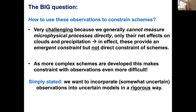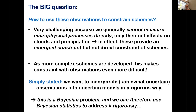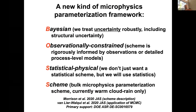Stepping back, we want to incorporate observations — which always have some uncertainty — into uncertain models, but do this in a rigorous way. If you think about the field of statistics, this is really a statement of Bayes' problem. So we can use Bayesian statistics to address it rigorously. From this fairly straightforward idea, we've developed the BOSS parameterization framework. Some of you might have seen Marcus give a talk on this at the RMSR science team meeting a few years back. Carly is going to give the talk right after mine with a lot more details and results using BOSS.